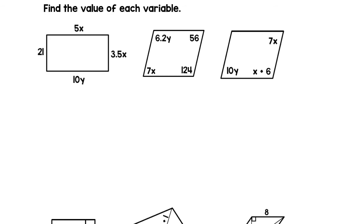First, we've got 5X for one side, 21, 3.5X, and 10Y. Well, since we know that opposite sides of a parallelogram are congruent, we can say that 21 equals 3.5X. So we can divide both sides by 3.5 and get 6 equals X. So we know X equals 6.